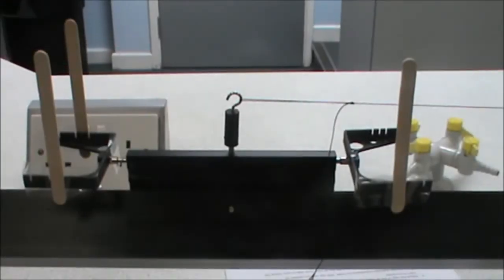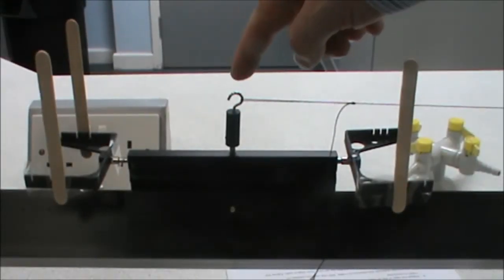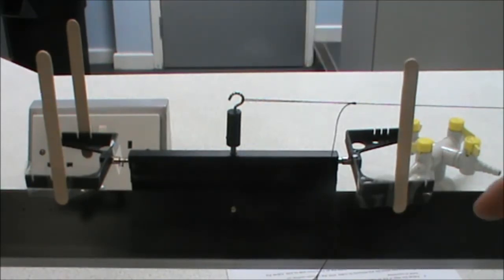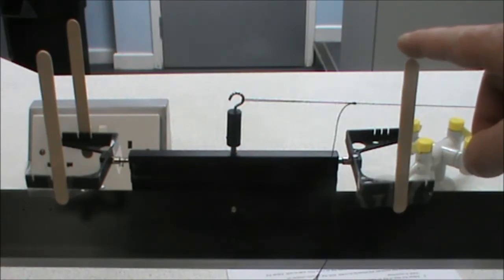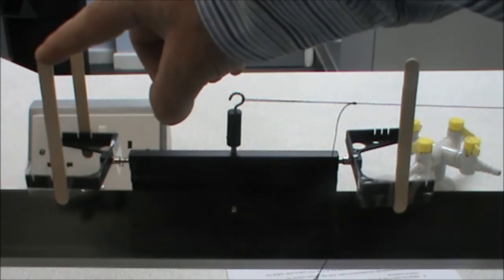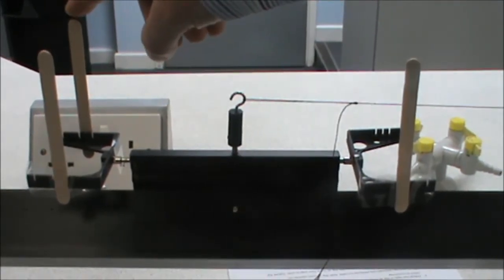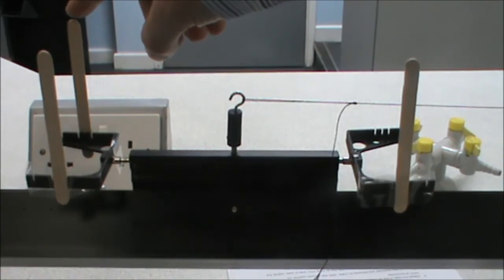Here's our glider. It's got a hook in the middle where we've attached the cable for our masses. And we've added three lollipop sticks. The first one triggers the starting point for the timer. The second one stops the timer. And then on the other side this one triggers the light gate to measure the final speed.